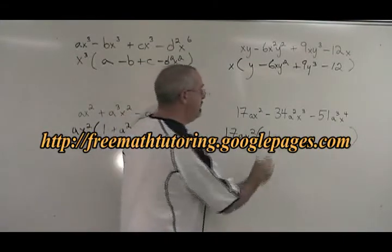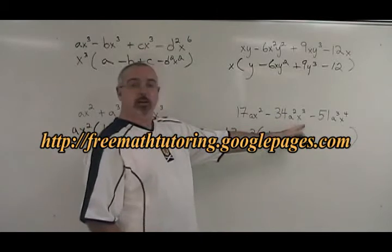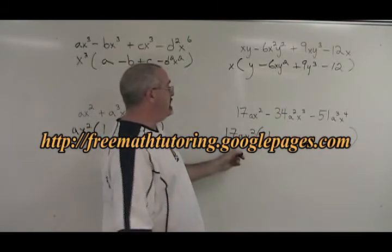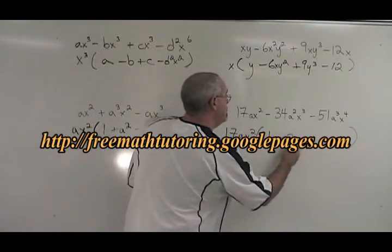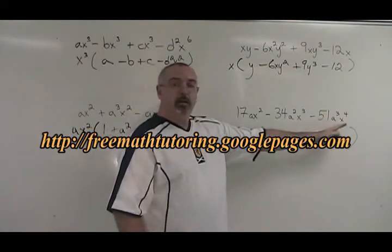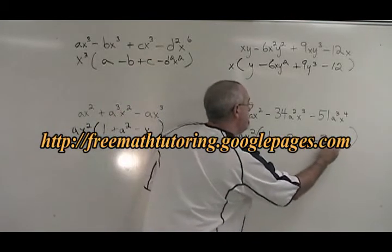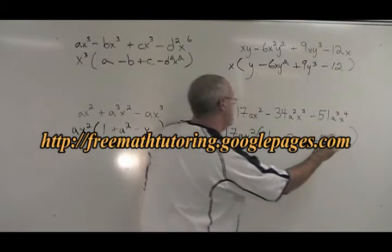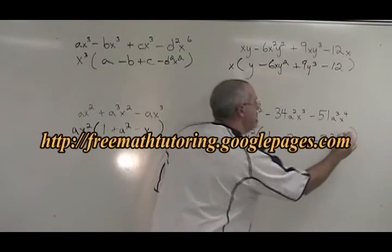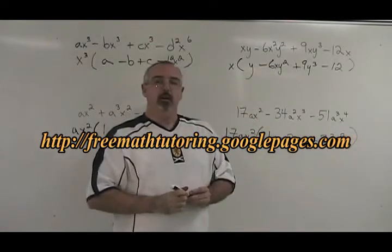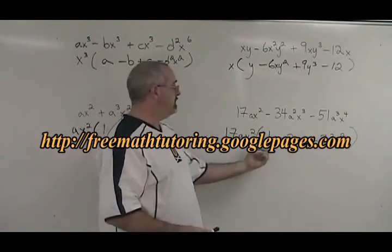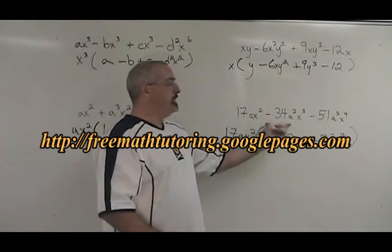17AX squared divided by 17AX squared is 1. Negative 34A squared X cubed divided by 17AX squared is minus 2AX. Negative 51A cubed X to the 4 divided by 17AX squared is minus 3A squared X squared. And again, you can verify. With all factoring, you can verify by multiplying your factors together to get the original question.